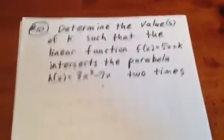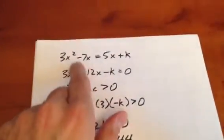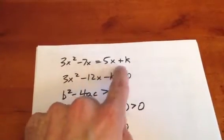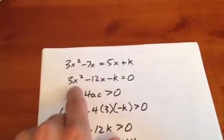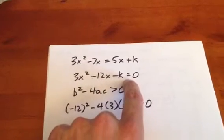What we're going to do here is let the two functions equal each other. That means 3x² - 7x is going to equal 5x + k. Or in other words, 3x² - 12x - k is going to equal zero.